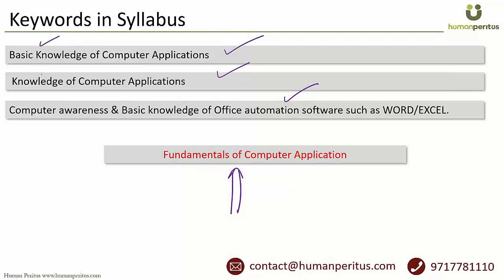Just because it says 'basic knowledge' or 'knowledge,' this is not a differentiator of difficulty level. Even though the syllabus is written differently across these three exams, there is not a single point of differentiation that clearly defines what is covered or not. In fact, where 'basic knowledge' is given and also where 'computer awareness and basic knowledge of office automation' is given, the questions were actually tougher.